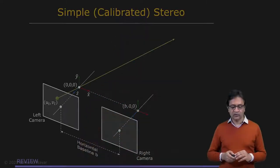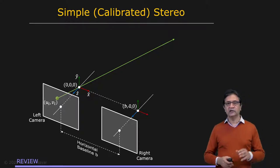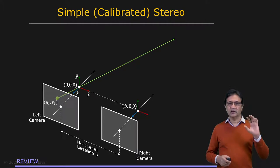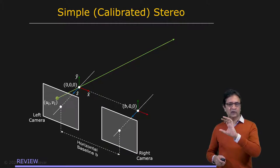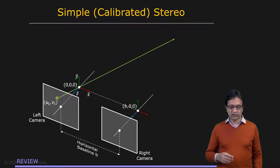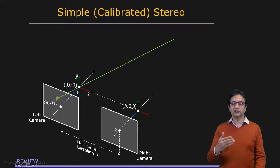But first, let's quickly recap what we have discussed before, which is calibrated stereo or simple stereo. In simple stereo, we have a left camera and we know everything about it in terms of its internal parameters. We take a picture of a scene and simply translate this camera along the x-axis to create a right camera, then take a second picture of the scene. The translation is by a distance b, which we call the baseline. From these two images, we can compute the three-dimensional structure of the scene, and the principle is triangulation.